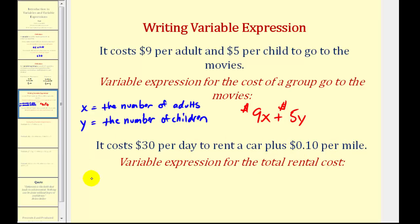So we could let d equal the number of days, and let m equal the number of miles driven. So the total cost of renting the car would be 30d plus 0.10m.